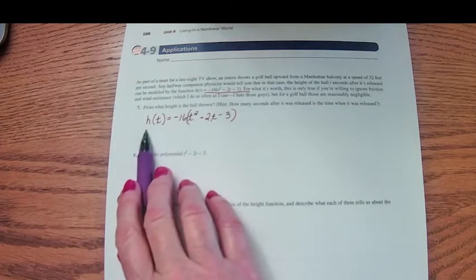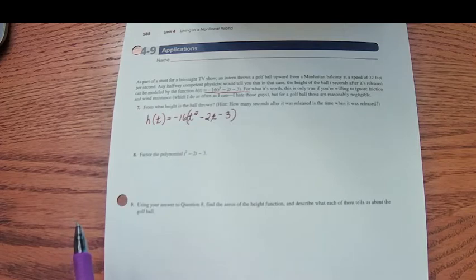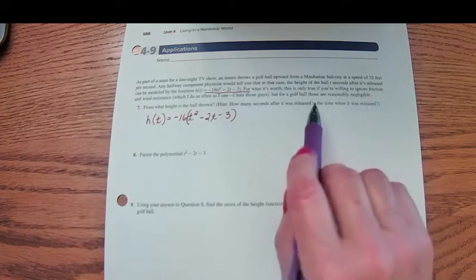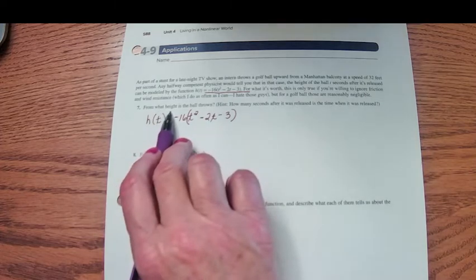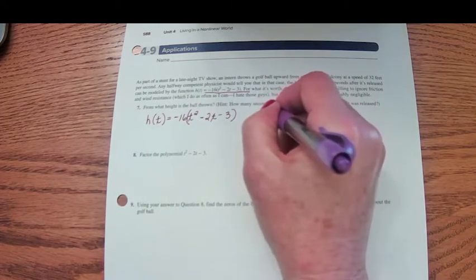This is the height of the ball in t seconds after it's thrown, and this is only true if you're ignoring friction and wind and such. So from what height is the ball thrown?